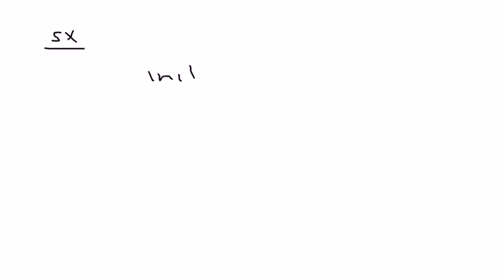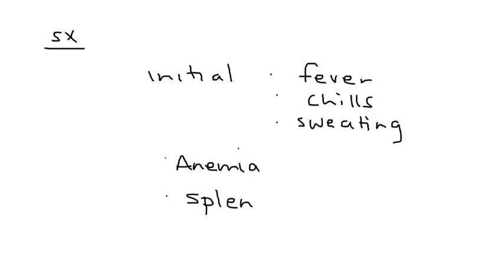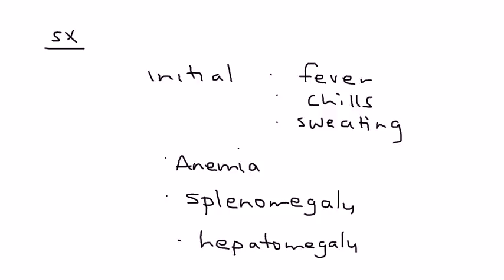The symptoms of malaria initially involve fever, chills, and profuse sweating. Later on physical exam, you can also see signs of anemia, and the liver and spleen will be enlarged — splenomegaly and hepatomegaly.